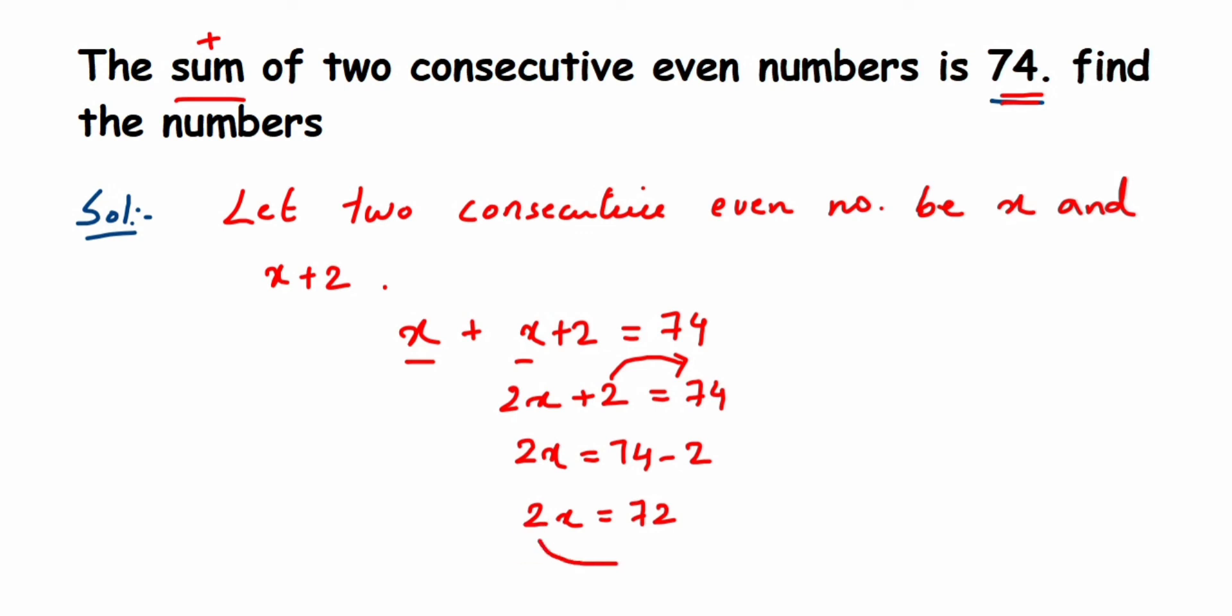Therefore x will be equal to 72 upon 2. I'm going to do a cancellation here: 2 1s are 2, 2 3s are 6, 1 is left out that makes the number 12, so 2 6s are 12. This is equal to 36. So you got the first number 36, so the second number will be x plus 2, which is 36 plus 2, which is 38.